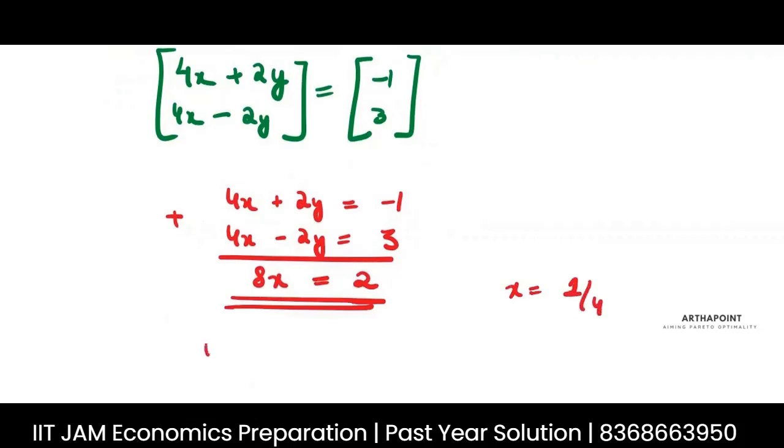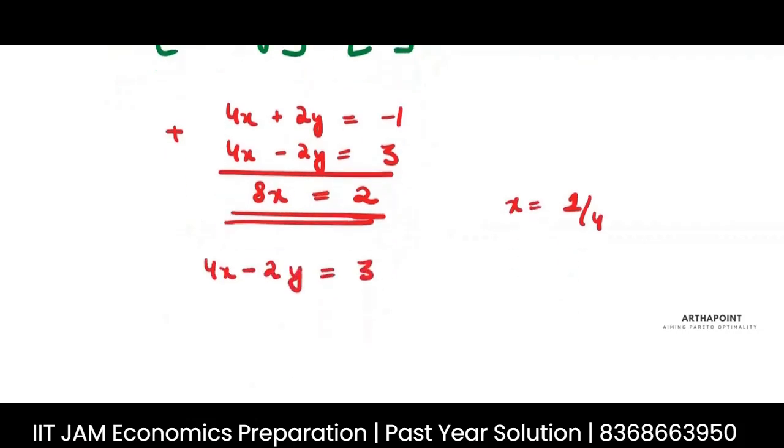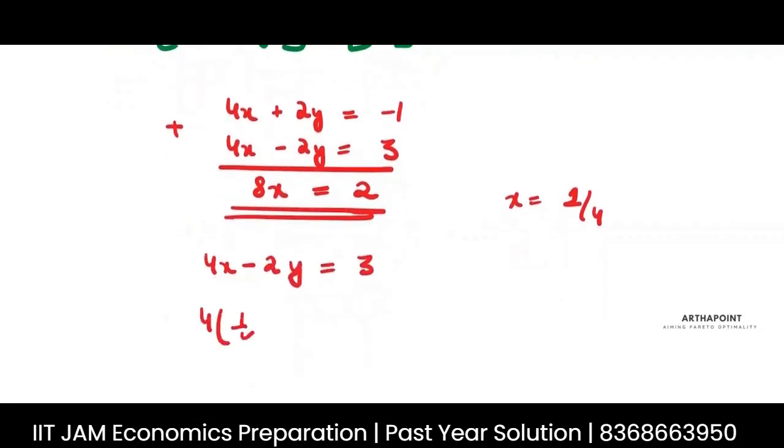Put the value of X in any of the equations. 4X minus 2Y is 3. Instead of X I will put 1 by 4 minus 2Y is equal to 3. 1 minus 2Y is equal to 3. Minus 2 is equal to 2Y. Y is equal to minus 1.